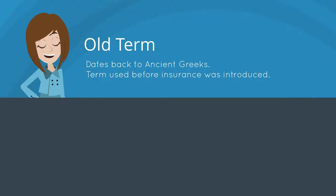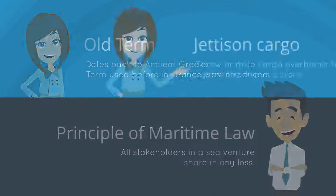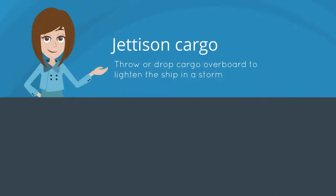The term general average goes back to the ancient Greeks and Rhodian law. It was actually used to cover risks before the introduction of insurance. Simply put, it is a principle of maritime law whereby all stakeholders in a sea venture proportionately share any loss resulting from a voluntary sacrifice of a part of the ship or cargo in the case of an emergency.